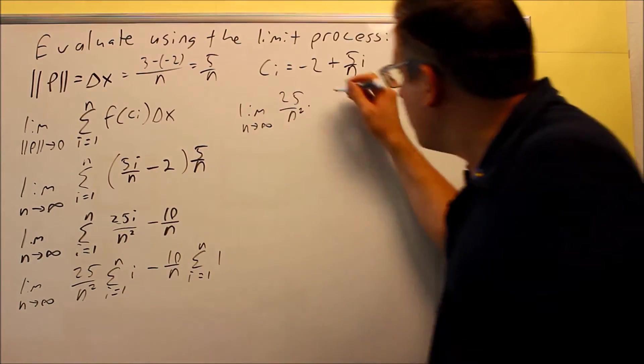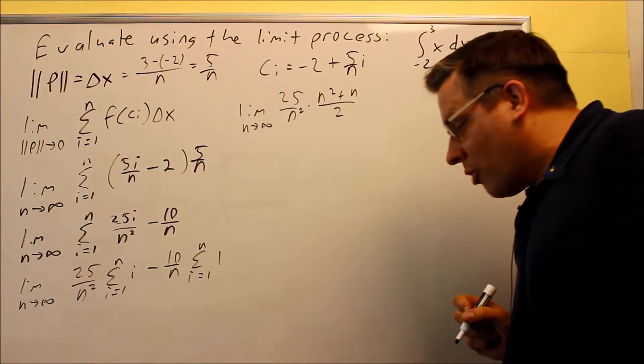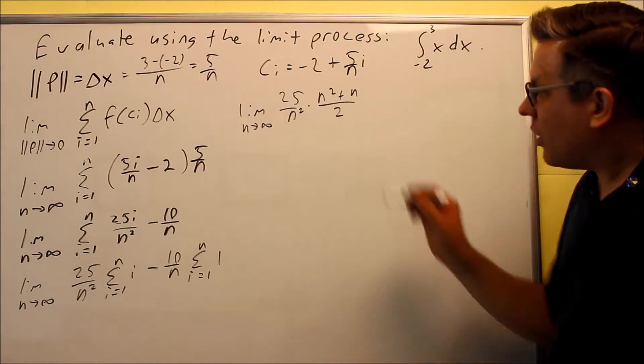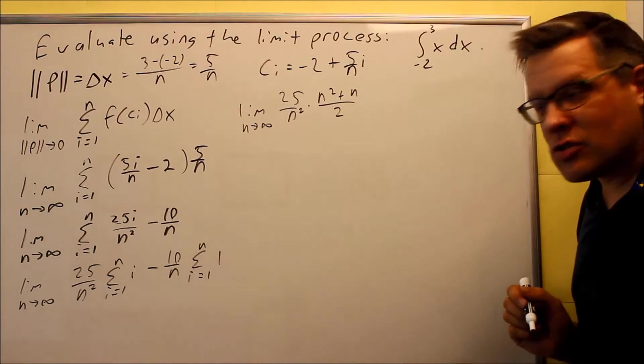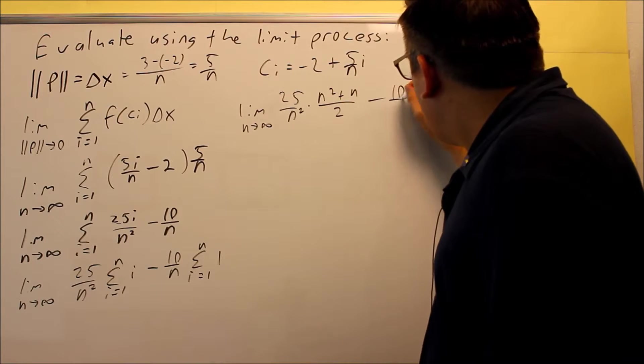n squared plus n over 2 is the special formula that we're putting in for that one. And notice I'm using the expanded version because eventually we've got to break all these down anyway. So, it's better just to use the expanded version there. And then, I have a minus 10 over n.